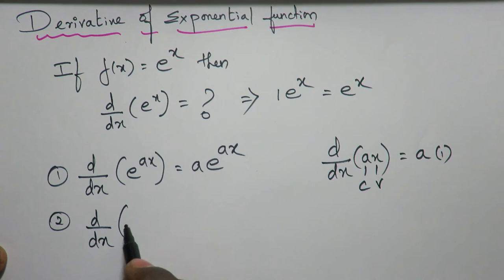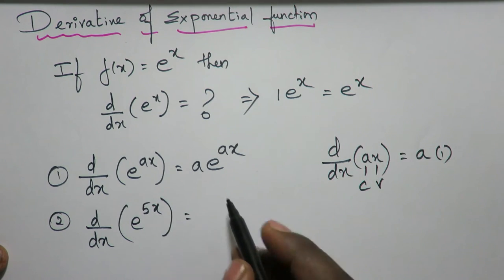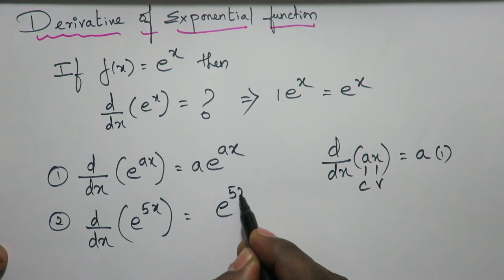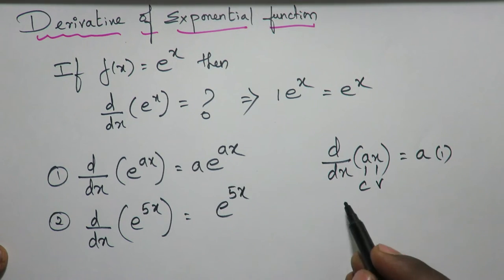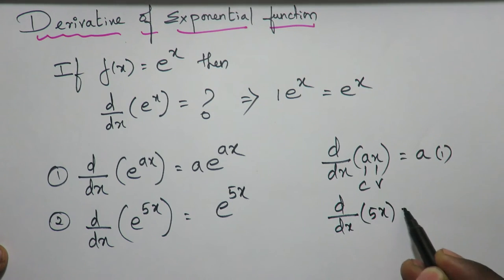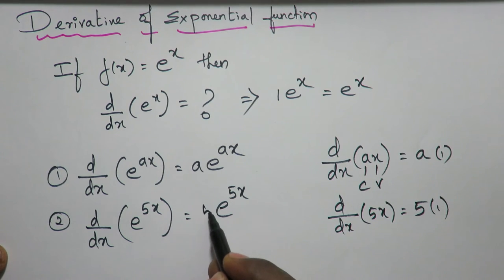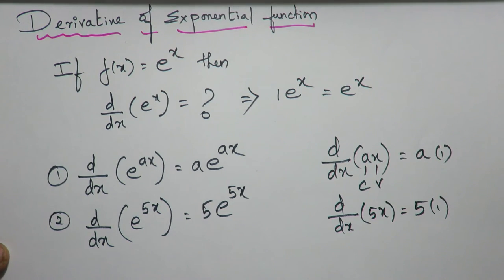Now if a problem is like this: e^5x. How do you write it? Write e^5x as it is, then differentiate 5x. What is the differentiation of 5x? Keep the constant as it is, differentiation of x is 1. So write it in front. Now try this third one.